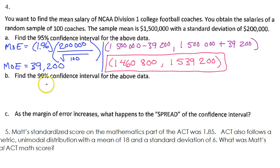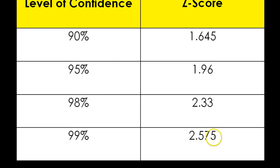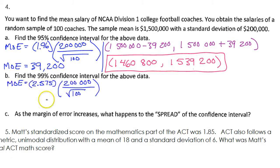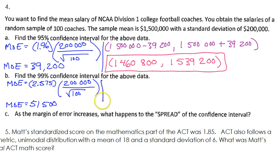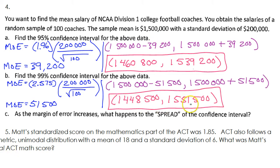Let's do the exact same thing for the 99% confidence interval. The calculations will be the same, except instead of using 1.96, we will be using 2.575 — that goes with 99% confidence. Just put that in your calculator. I'm getting 51,500 for my margin of error. We're going to once again add and subtract this number to the sample mean. This gives me my 99% confidence interval — I can be 99% sure that the real average salary of all coaches is somewhere in here.